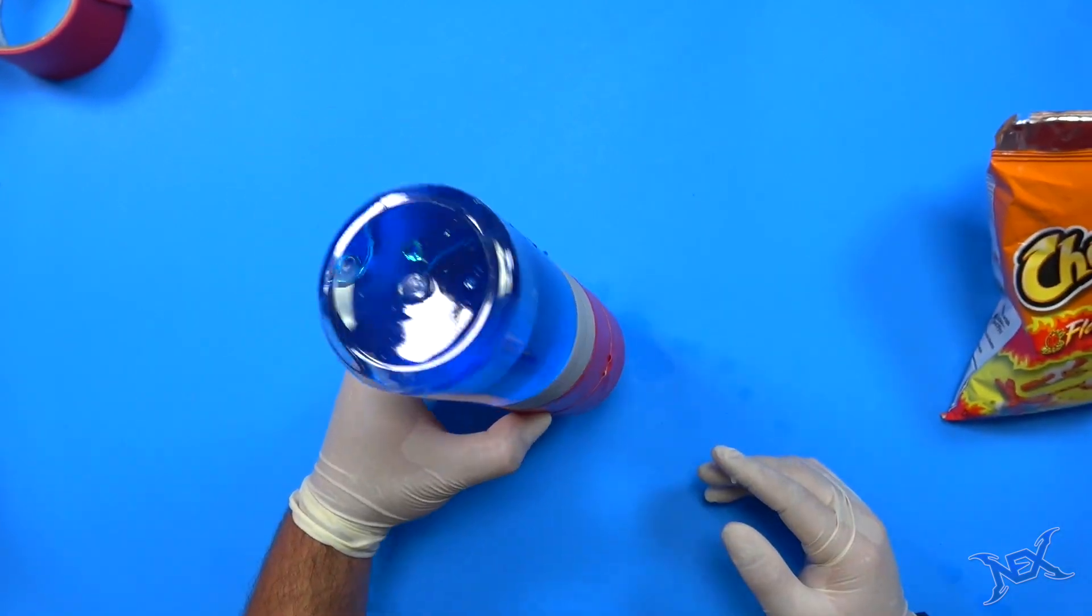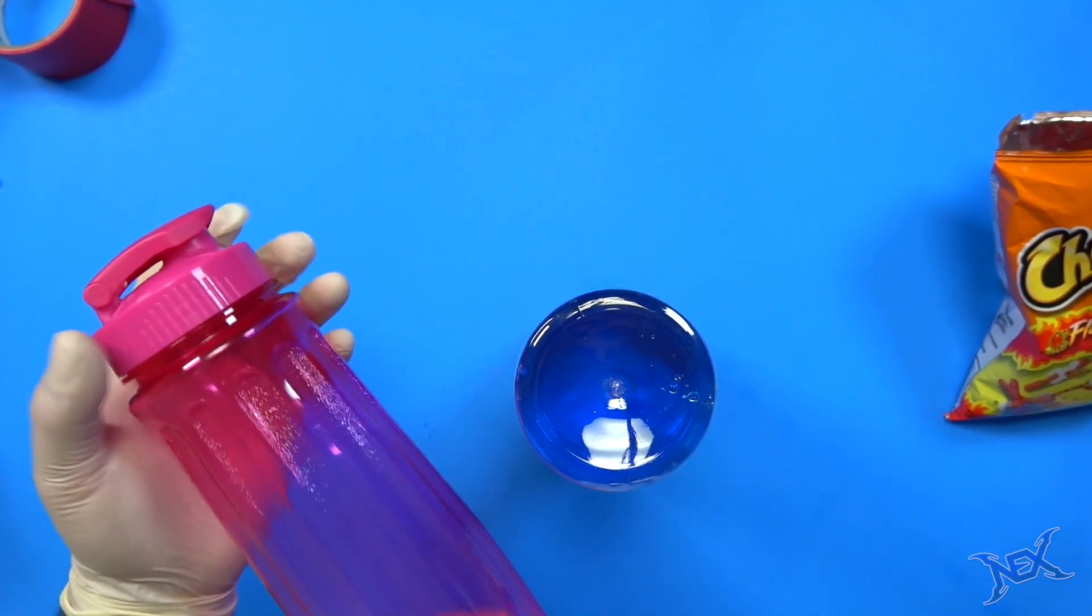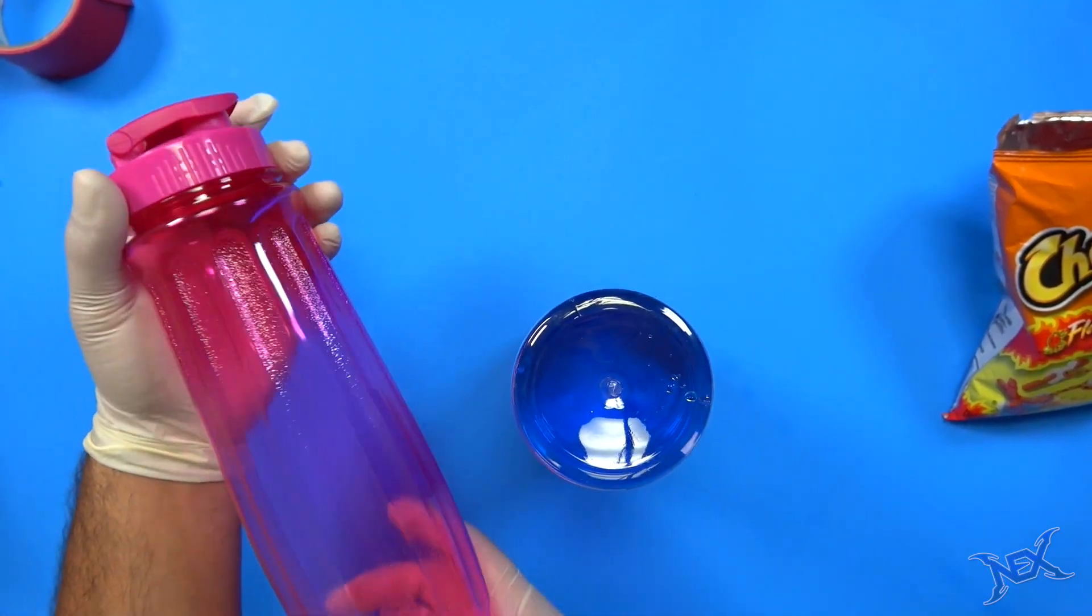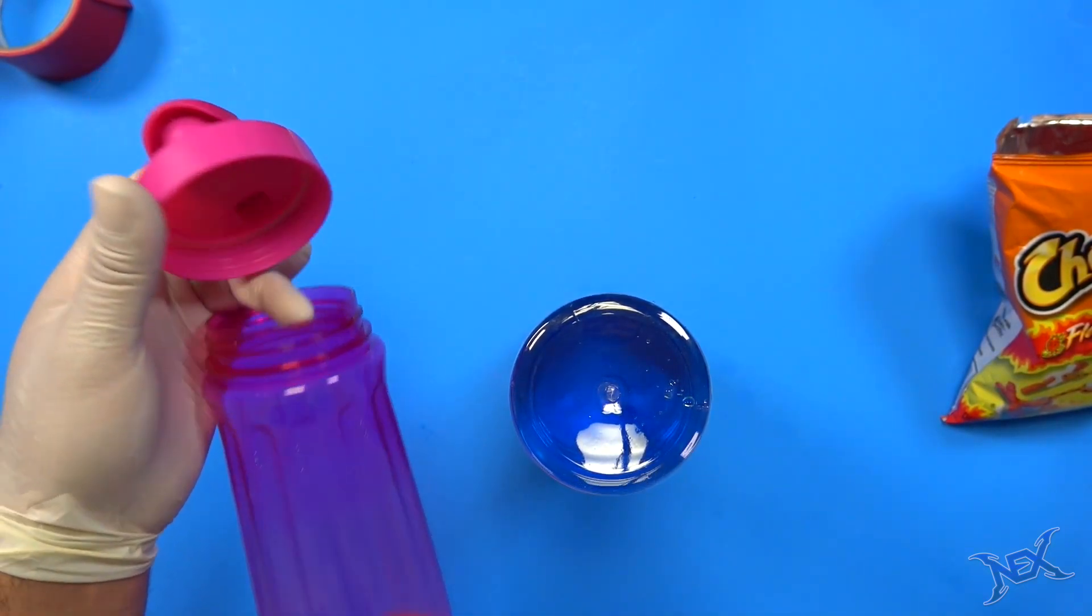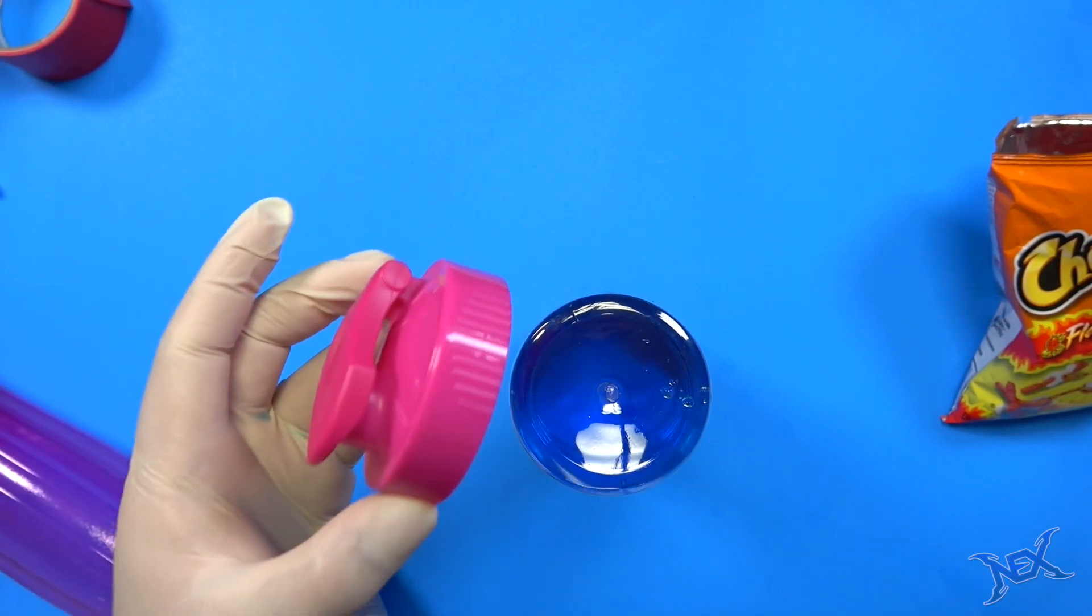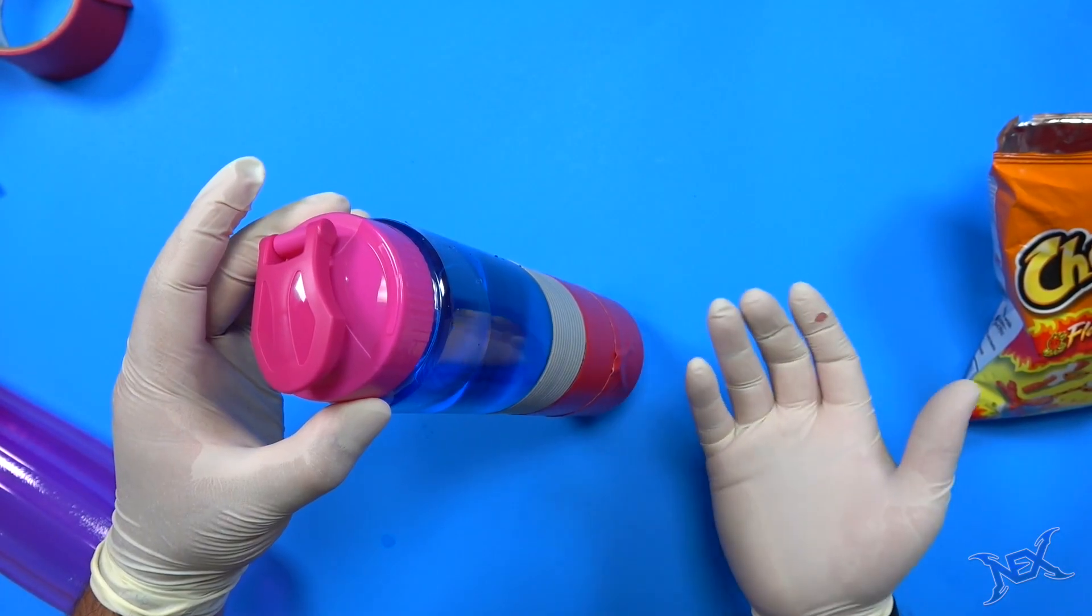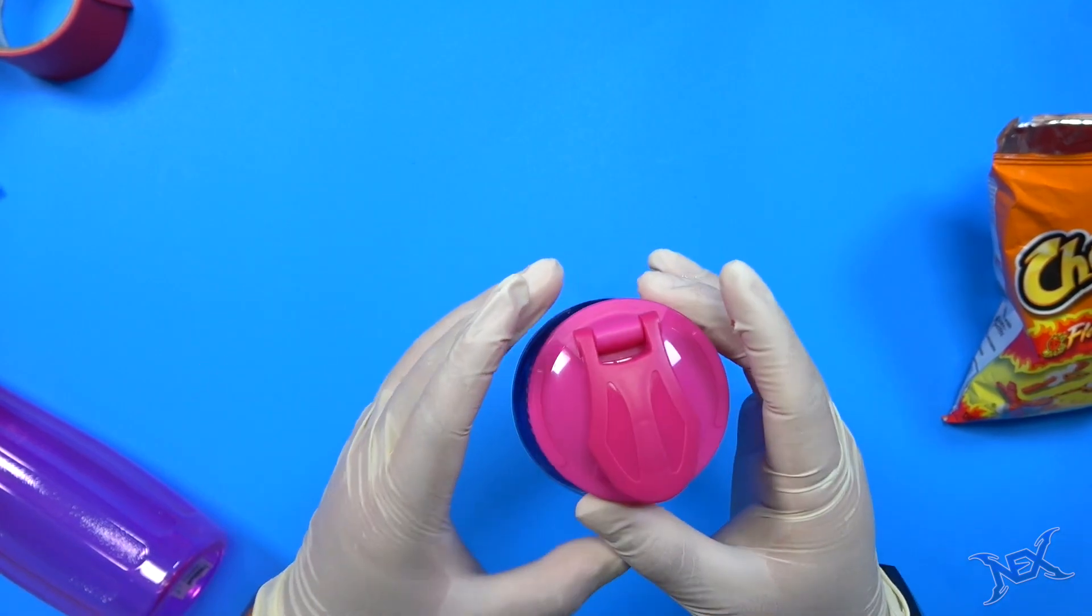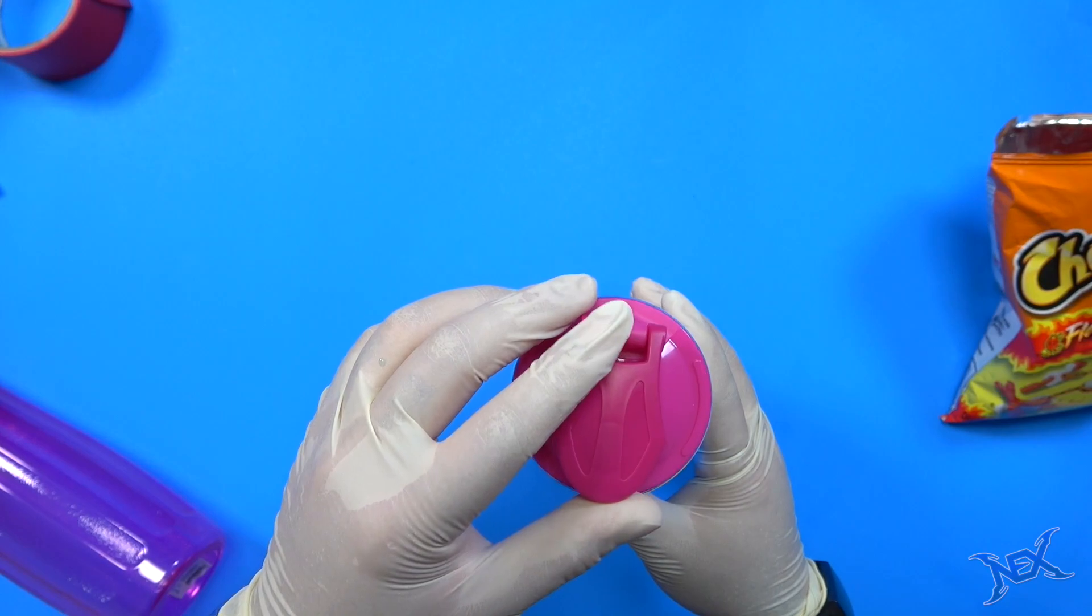But still it doesn't look like a water bottle, which is what we're going for. Luckily, while I was at the dollar store I also got an actual water bottle. We don't really need the whole thing, we just need the cap. If we were to take this cap and stick it on top like so, it'll look like an actual bottle. So that's what we're gonna do. I'm gonna glue this on top of this bottle and it'll look like a regular water bottle.